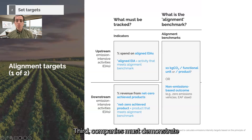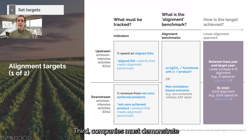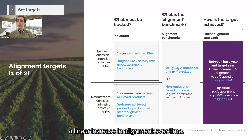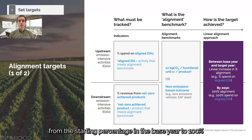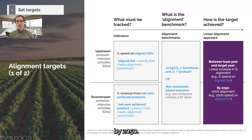Third, companies must demonstrate a linear increase in alignment over time. For each emissions intensive activity, alignment should increase from the starting percentage in the base year to 100% by 2050.